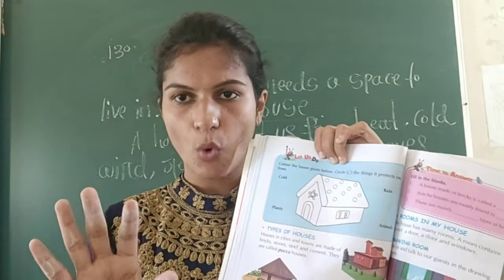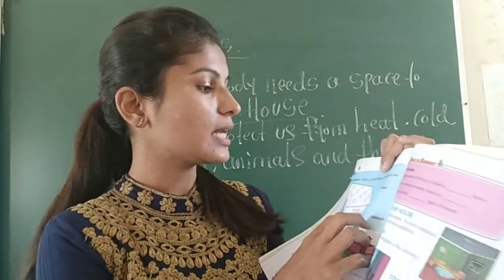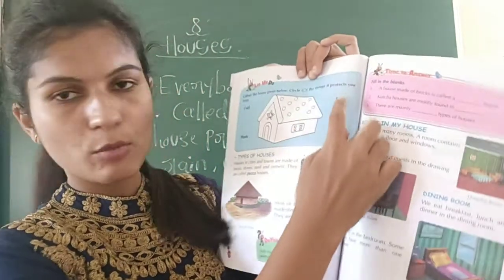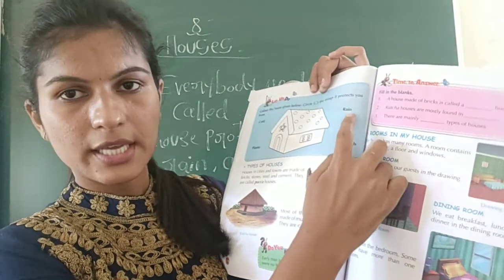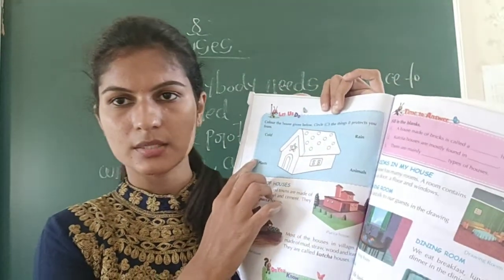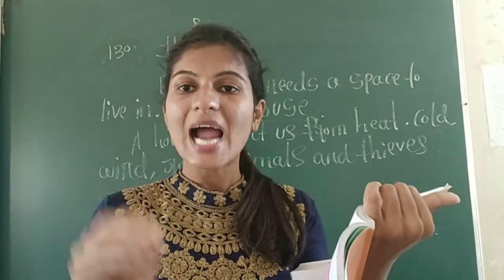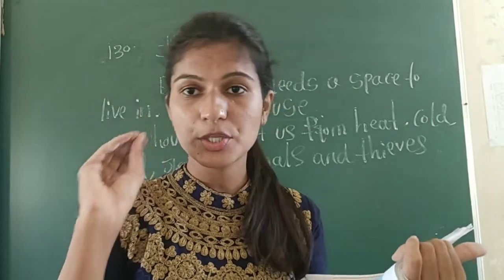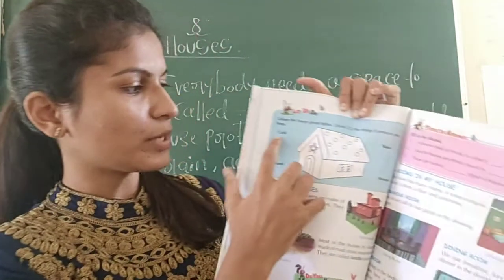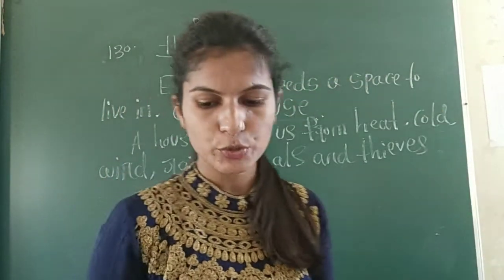After coloring, take a pencil and circle the things that protect you. They have given some things here: rain, animals, cold, and plants. You have to circle the things that a house protects you from. House protects you from cold - circle the cold.